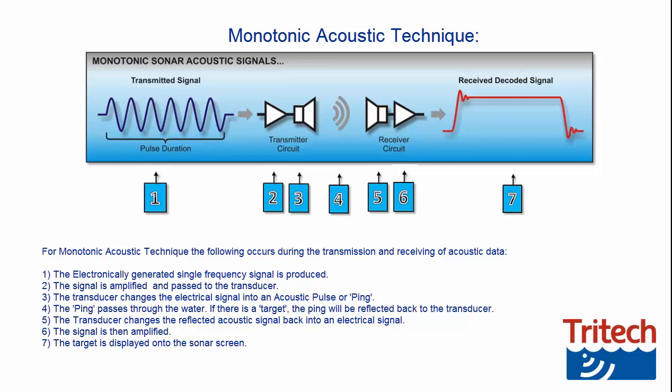Step 1: The electronically generated single frequency signal is produced. Step 2: The signal is amplified and passed to the transducer. Step 3: The transducer changes the electrical signal into an acoustic pulse or ping. Step 4: The ping passes through the water. If there is a target, the ping will be reflected back to the transducer.